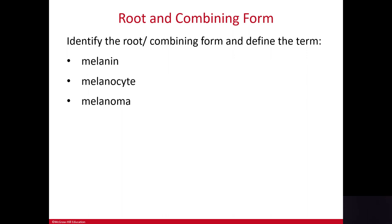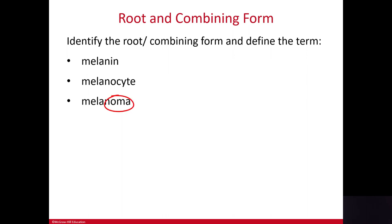Let's look at some root and combining forms. Melanin is the black pigment found in melanocytes. The term 'melano' comes from the Greek meaning black, and 'cyte' is the suffix meaning cell, so melanocyte is the pigment-producing cell. In 'melanoma,' the ending 'oma' means tumor, so a melanoma is a tumor arising from the melanocytes — the pigment-producing cells.